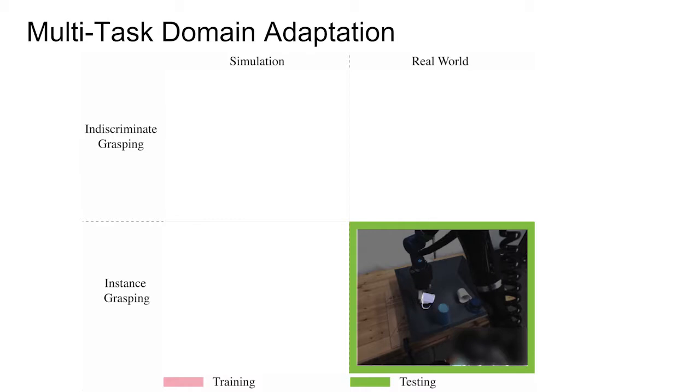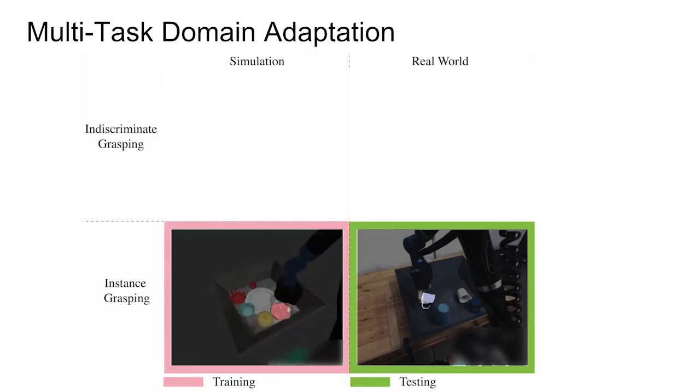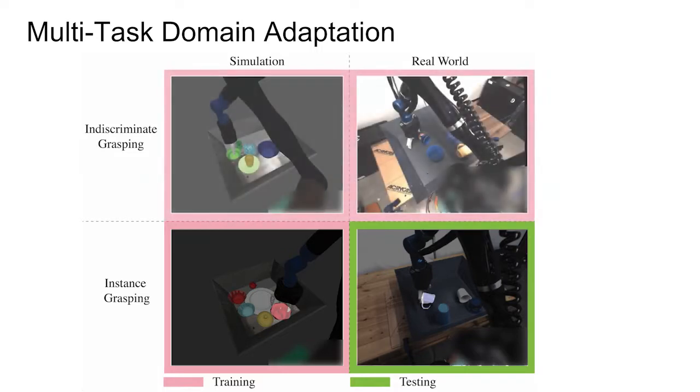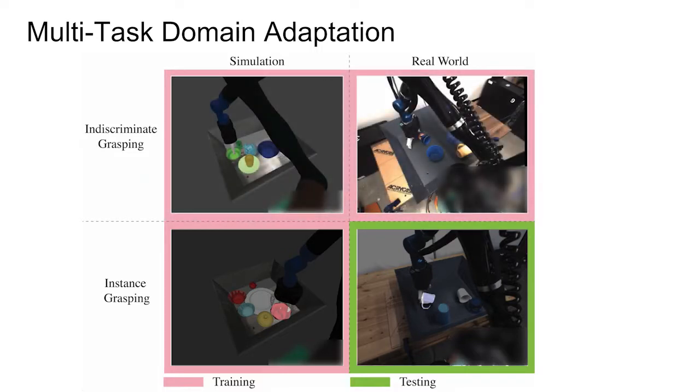Unlike recent works on indiscriminate grasping, to get a large-scale real-world dataset for instance grasping, we would need a sophisticated perception system to robustly identify and track the target object across time. To overcome this hurdle, we propose to only use simulation to collect labeled data for instance grasping. To resolve the domain shift between simulation and the real world, we utilize indiscriminate grasping data, which is available in both simulation and the real world.